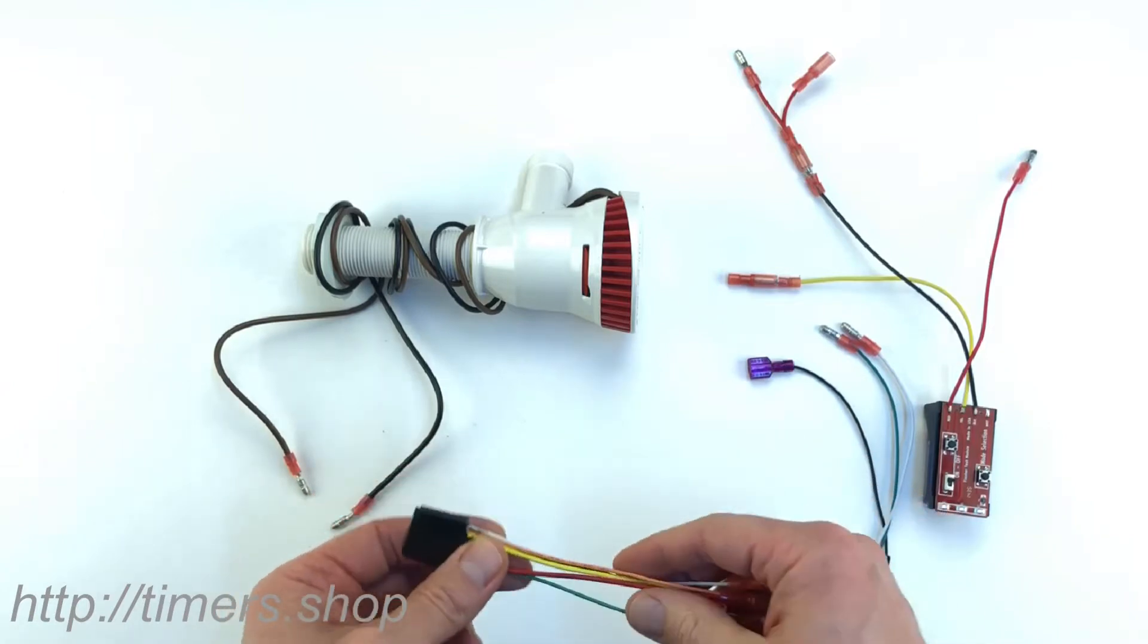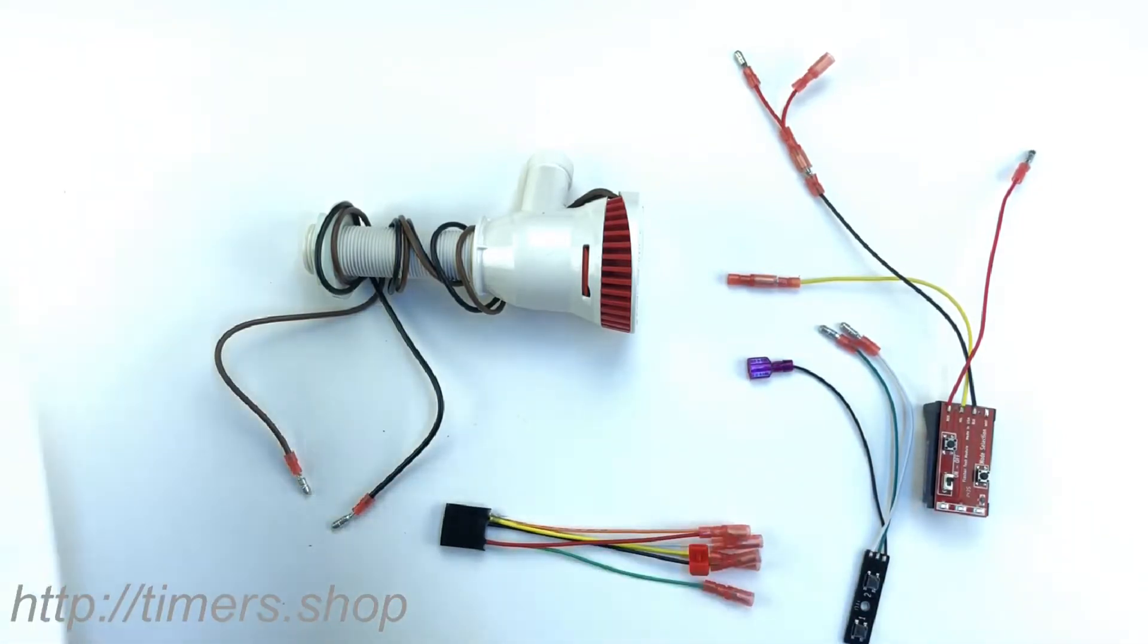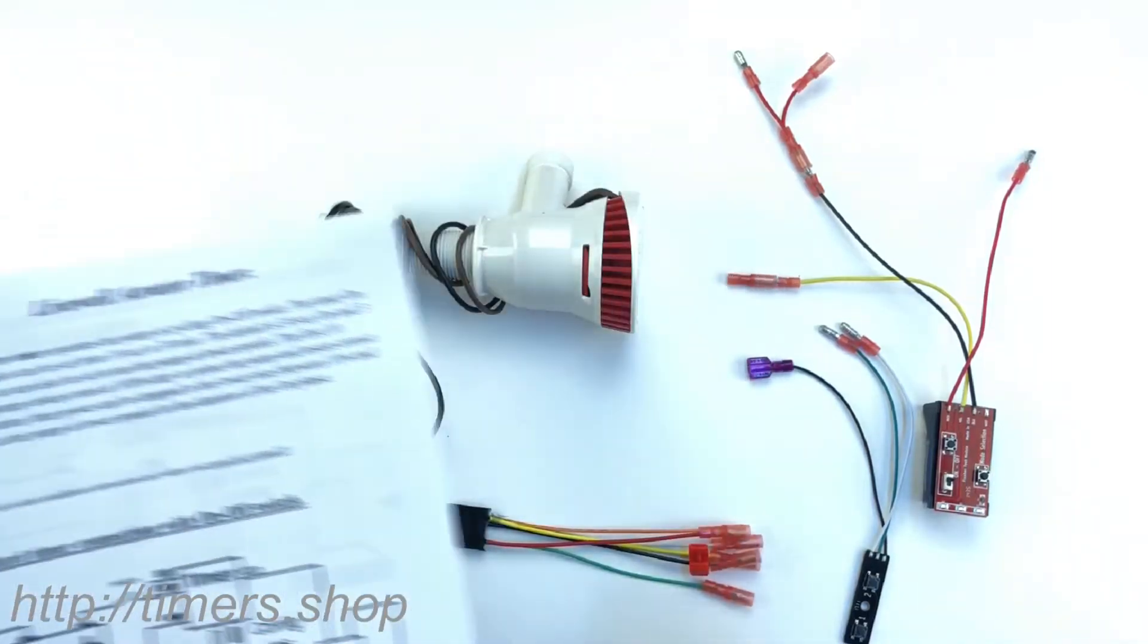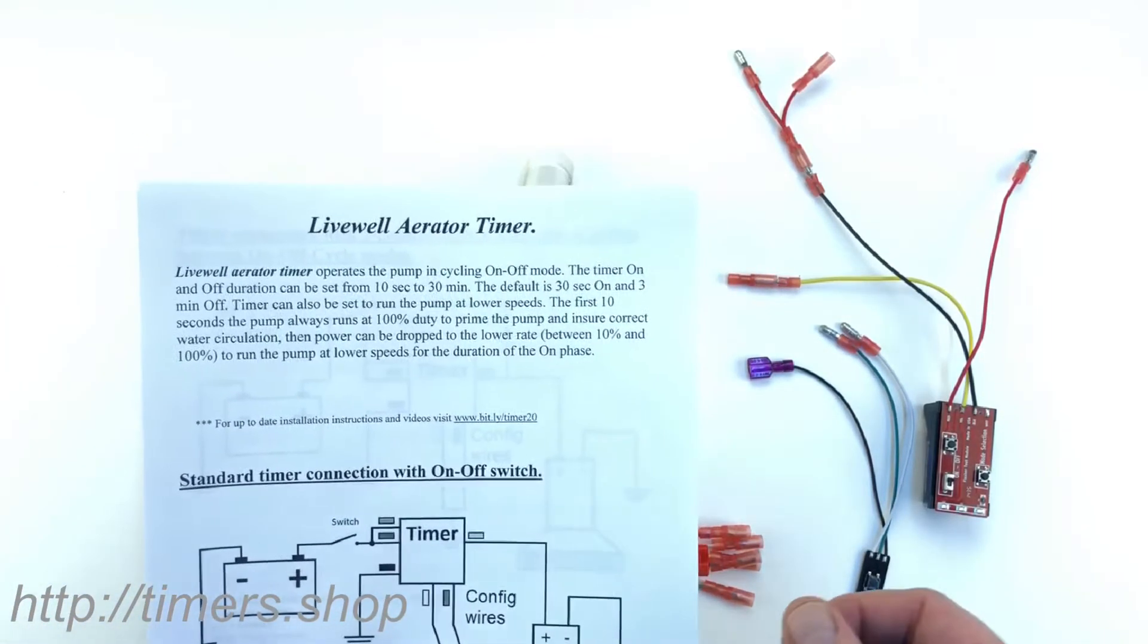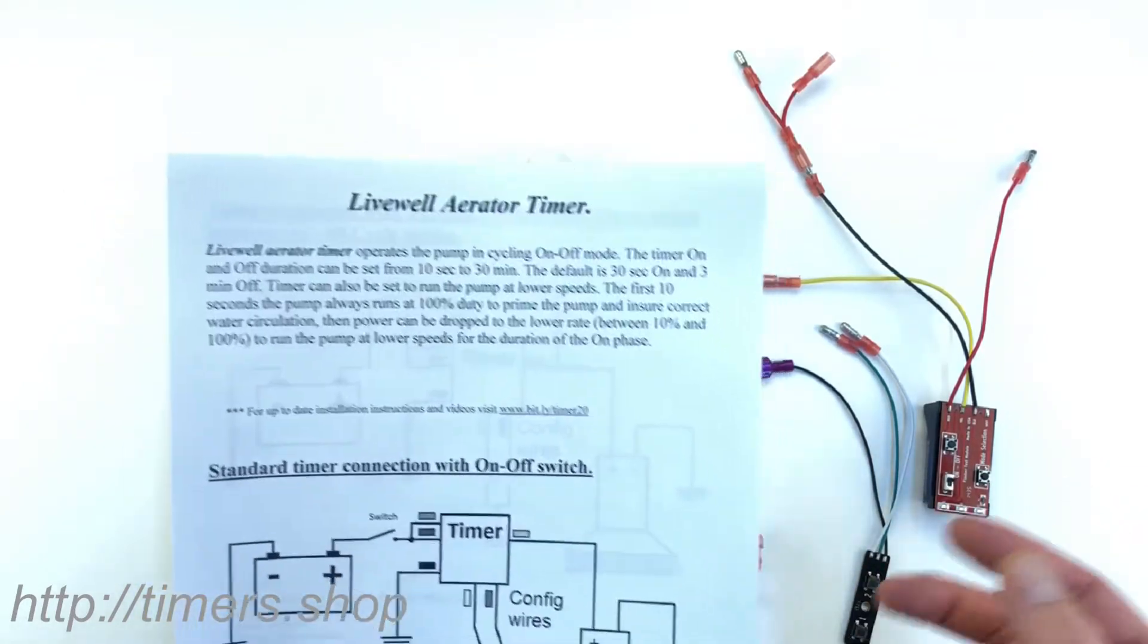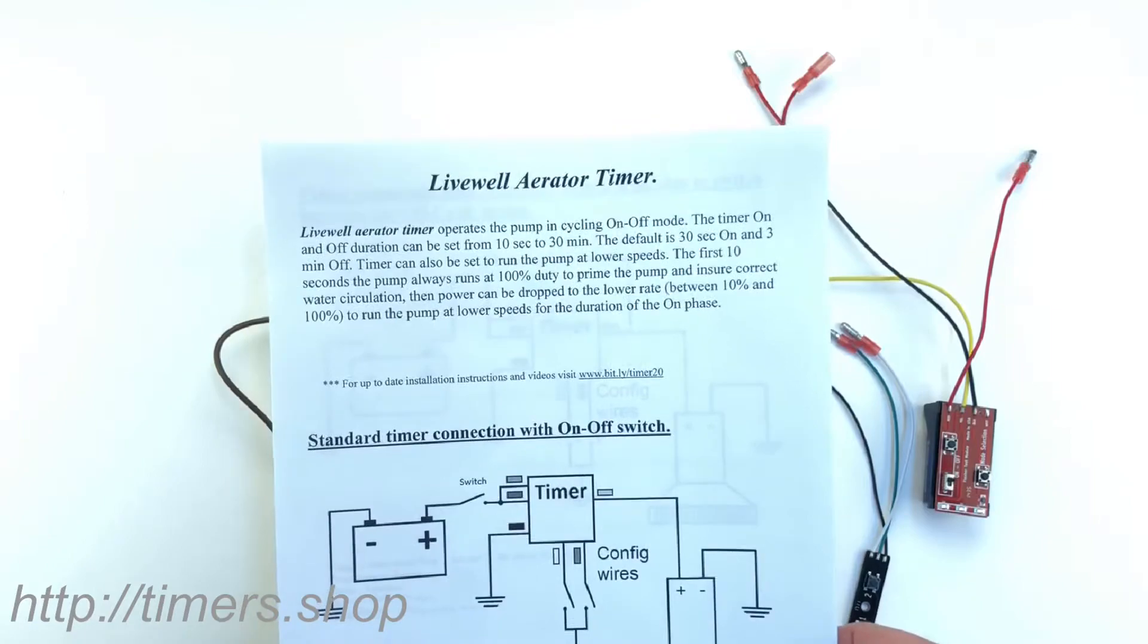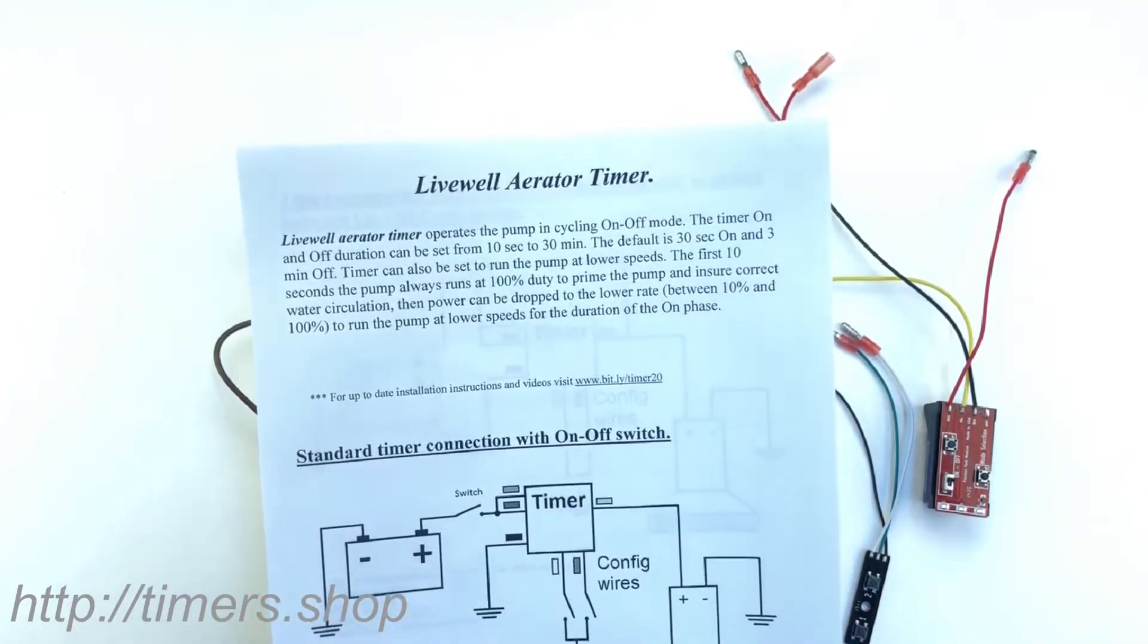Now, advantages of the timer: you can set it up for the operation on and off cycle. You can set your time between 10 seconds and 30 minutes. Your on time could be from 10 seconds to 30 minutes, your off time could be from 10 seconds to 30 minutes. The default time that's set in the timer is 30 seconds on and 3 minutes off, but you can change that.